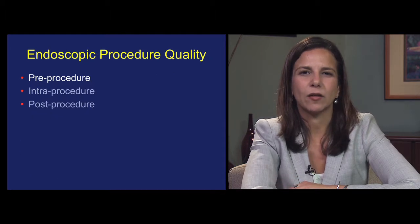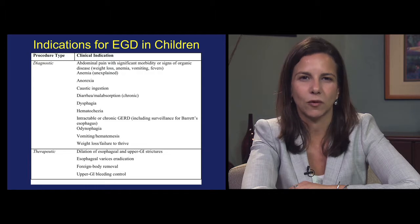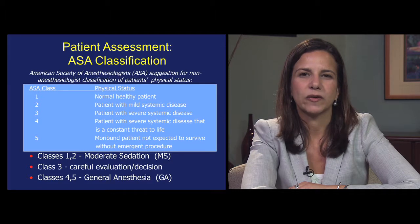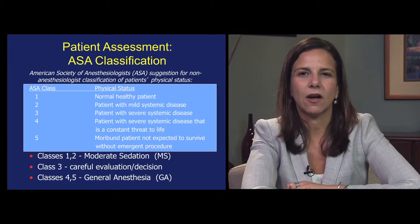In terms of pre-procedure elements of performing and documenting quality endoscopy in children, indications for performing upper endoscopy in children can be both diagnostic or therapeutic, and should be made clear to both patients and other providers before the procedure is performed. Another critical element of the pre-procedure phase of a quality endoscopy is to show evidence that the endoscopist assessed the patient. One way to do this is to document the ASA status, even if an anesthesiology colleague has also made note of this in their procedural documentation.